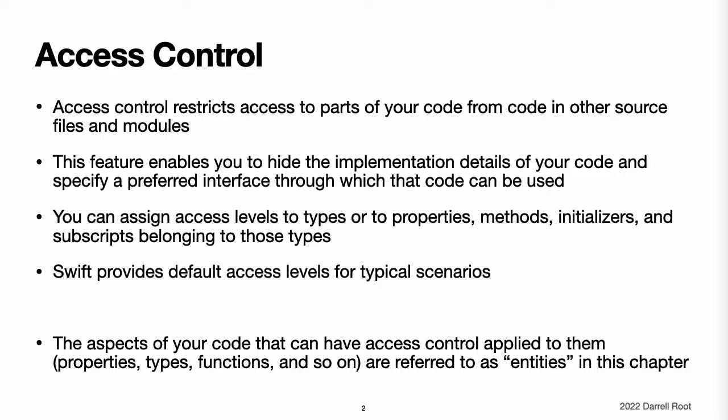Indeed, if you are writing a single target app, you may not need to specify explicit access control levels at all. Note, the various aspects of your code that can have access control applied to them — properties, types, functions, and so on — are referred to as entities in the sections below for brevity.